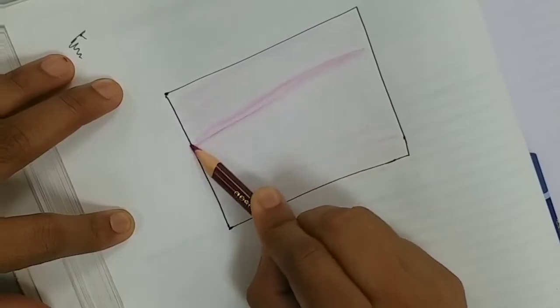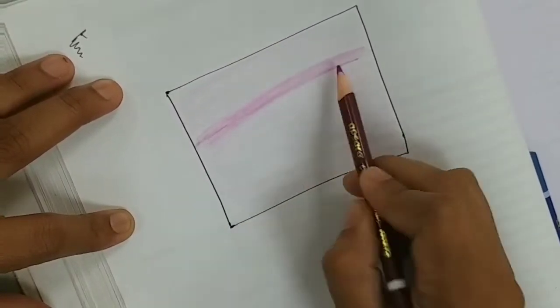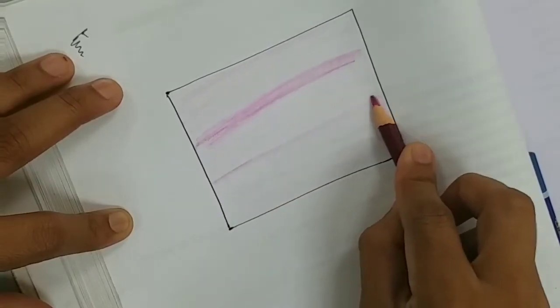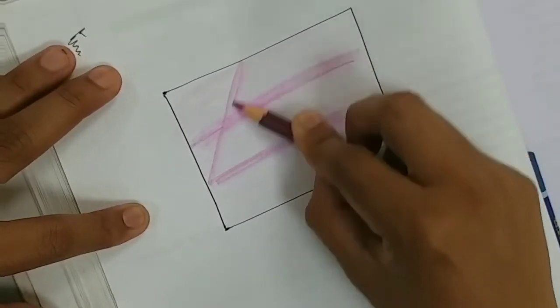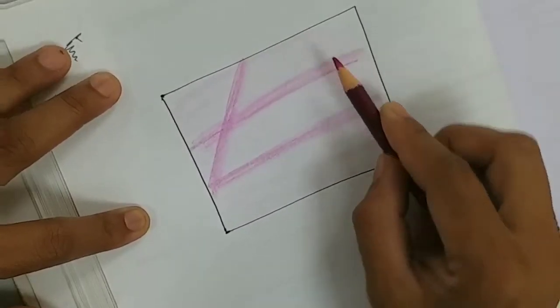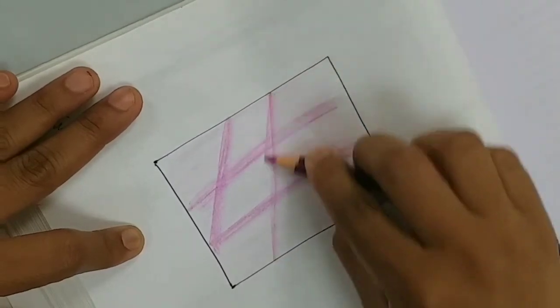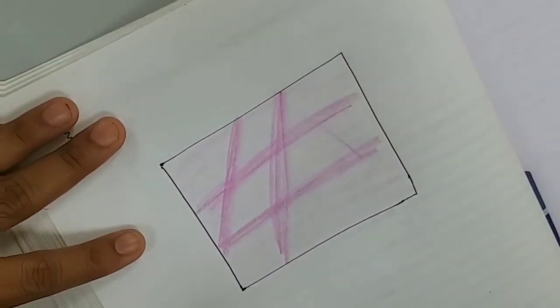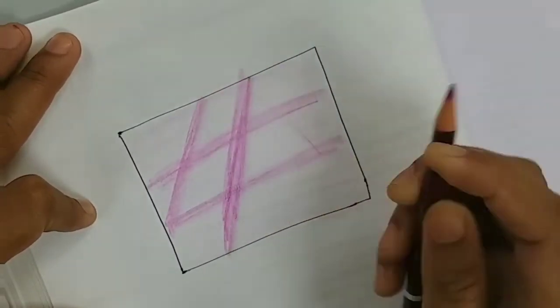The collagen fiber occurs in bundles. They are randomly arranged and show cross-striation over it. The bundles of collagen fiber can anastomose with another bundle.